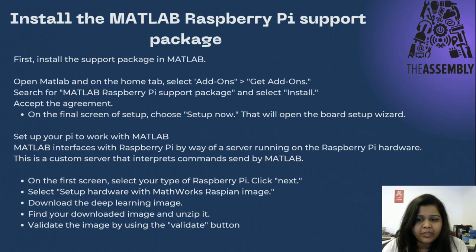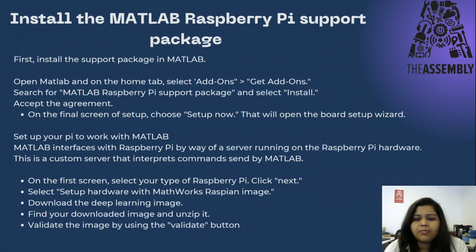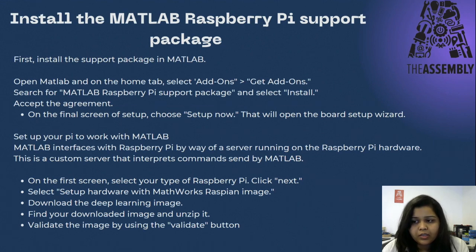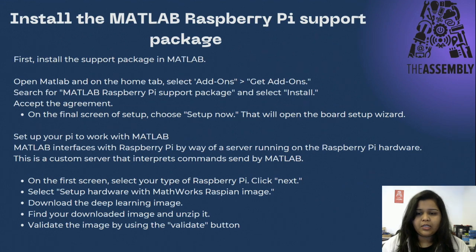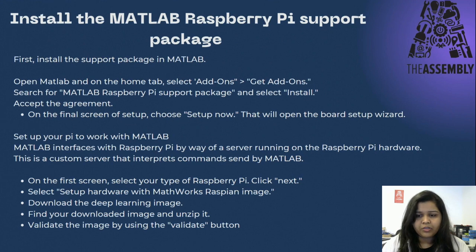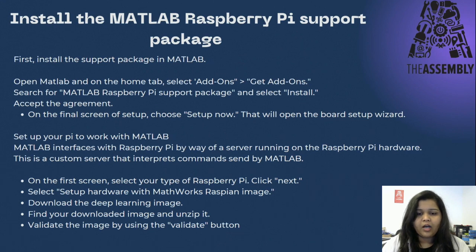Accept all the agreements and finalize with the setup by choosing Setup Now. Set up the MATLAB interface with the Raspberry Pi using the server and Raspberry Pi software and hardware. Select the Raspberry Pi and click Next, then select Setup Hardware, download the deep learning image, find the downloaded image, unzip it — this is the first criteria after downloading — and then validate the image using the Validate button.